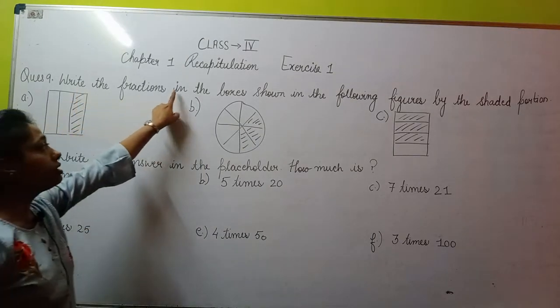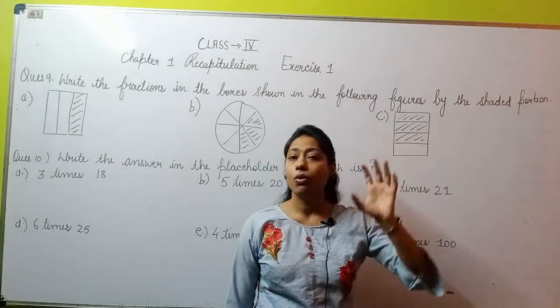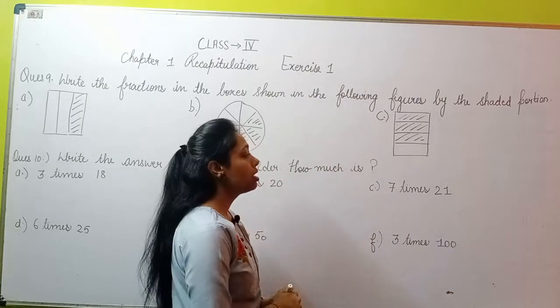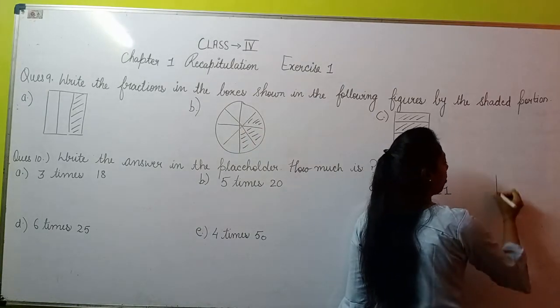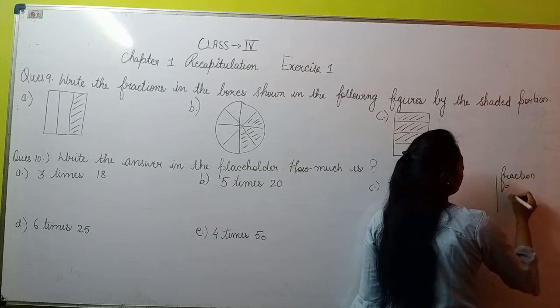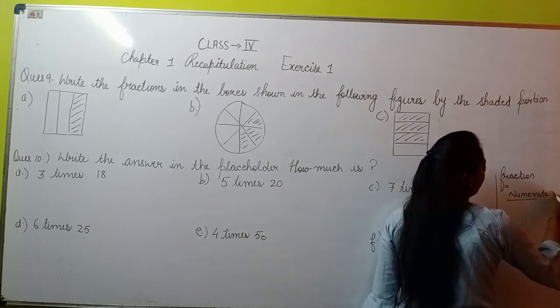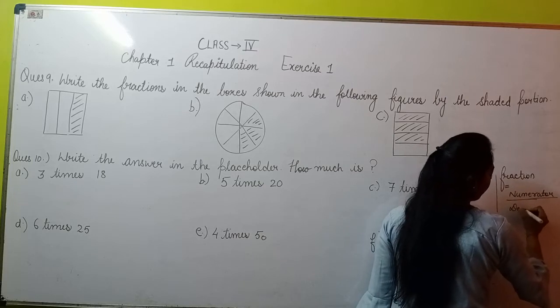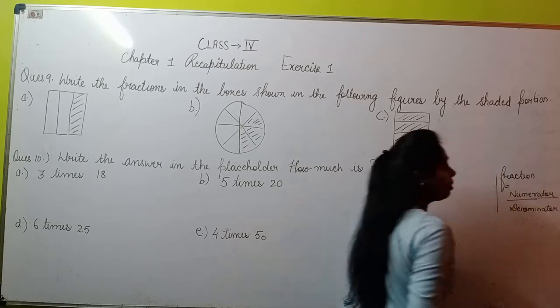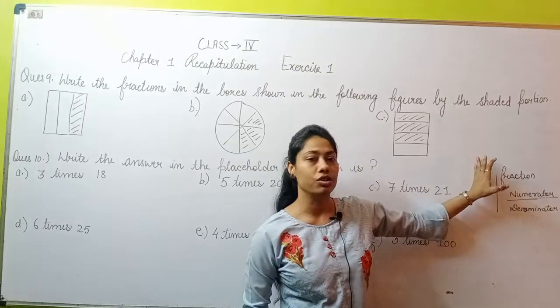Write the fractions in the boxes shown in the following figures by the shaded portion. You need to write fractions. What is a fraction? Fraction comes in the form of numerator and denominator. Any number which has both numerator (written on top) and denominator (written below the line), that is called a fraction.